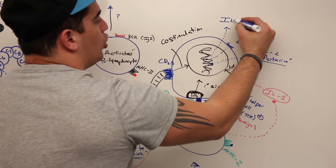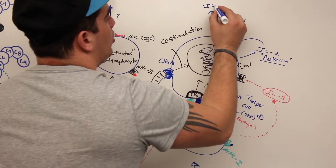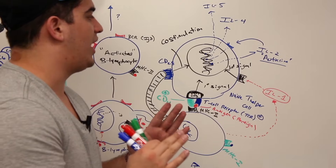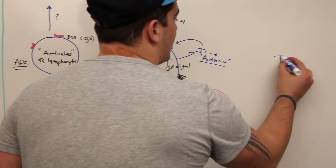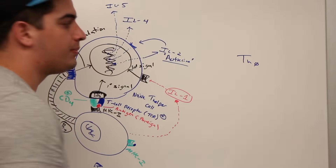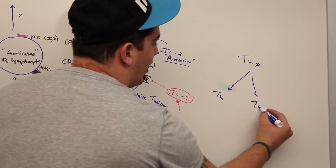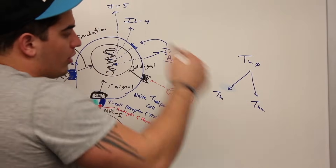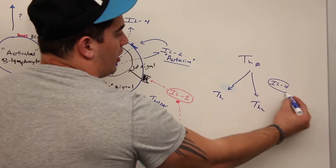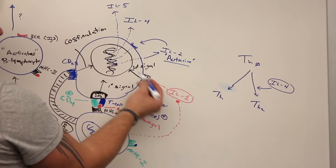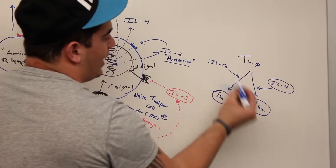Interleukin-2 can come back and bind on the same cell that secreted it — that's called an autocrine. It sends another signal back, activating genes to produce another cytokine called interleukin-4, and also interleukin-5. Now, a naive T helper cell can turn into two different types: T helper 1 or T helper 2. To become T helper 2, it needs stimulation from interleukin-4. To become T helper 1, it needs stimulation from interleukin-12.